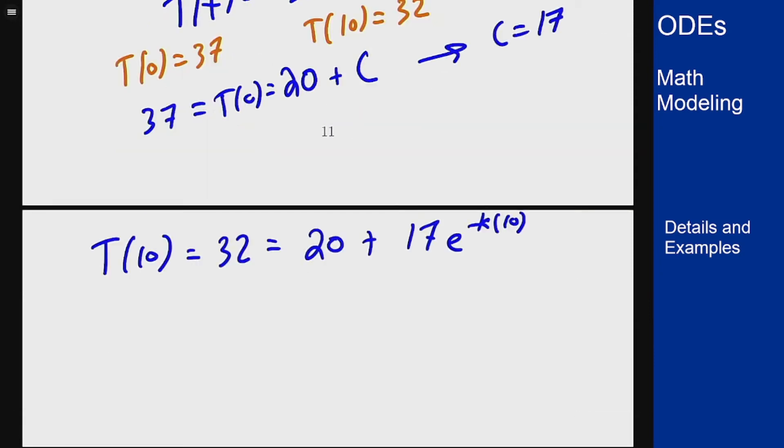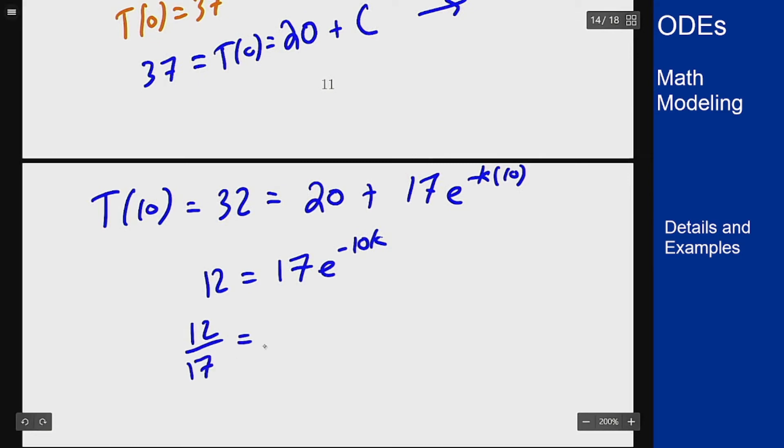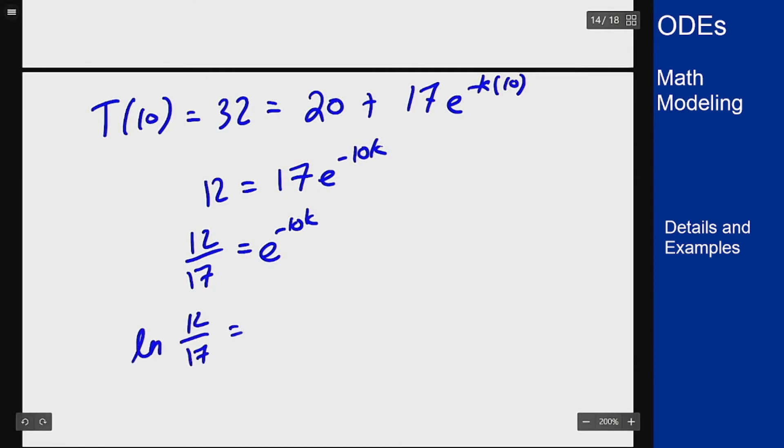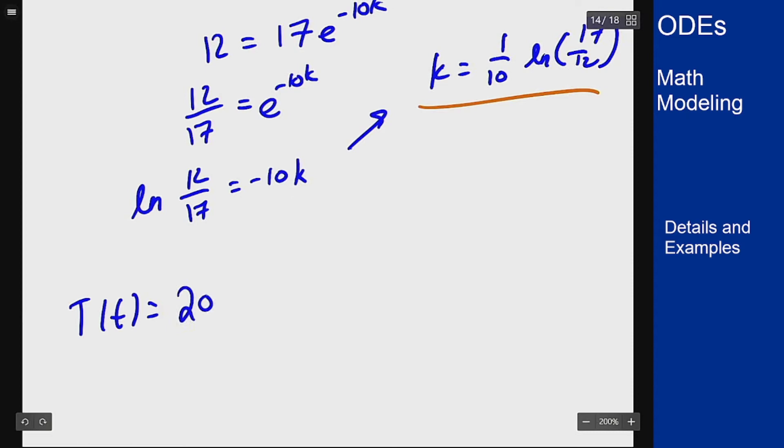Taking the natural log of both sides, ln(12/17) = -10k, which means k = (1/10)ln(17/12). Therefore, my final expression for T as a function of time is T(t) = 20 + 17e^(-(t/10)ln(17/12)).